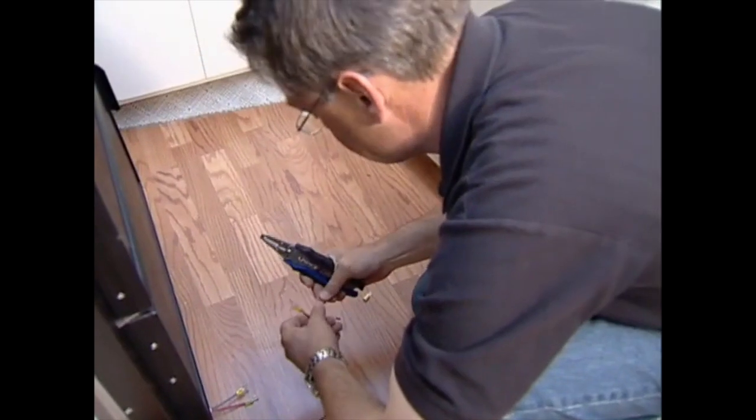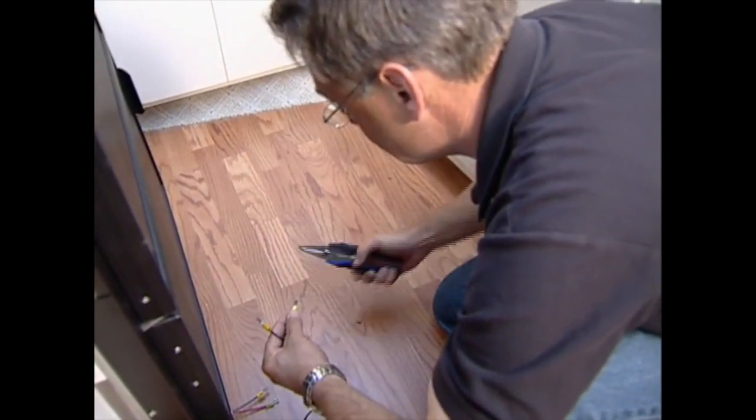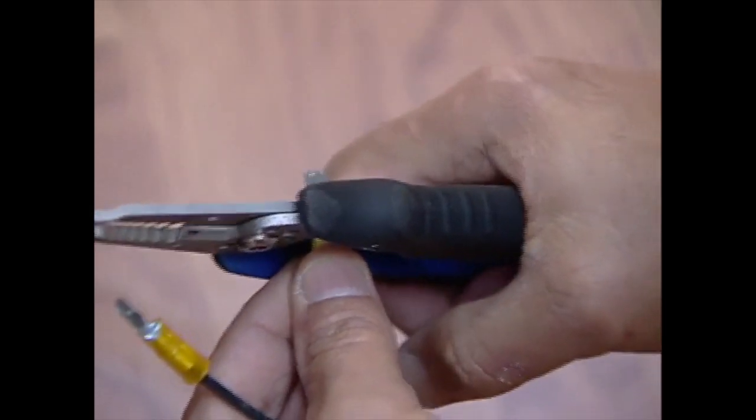To complete the wiring, male and female spade connectors were crimped onto the source and fridge wires so the 12-volt power could be disconnected in the future.